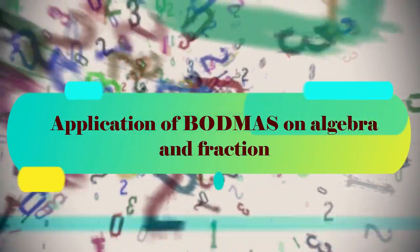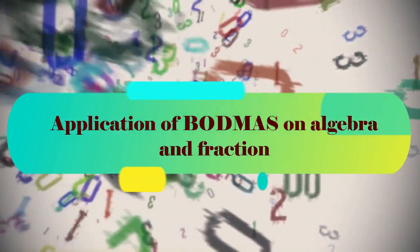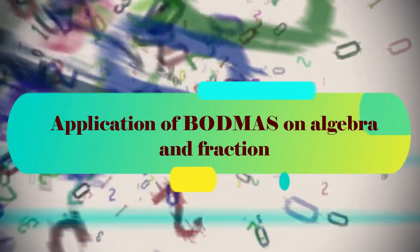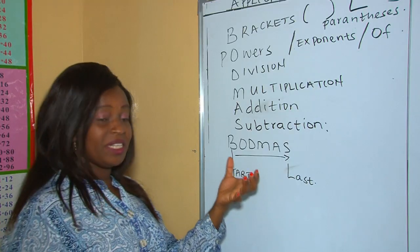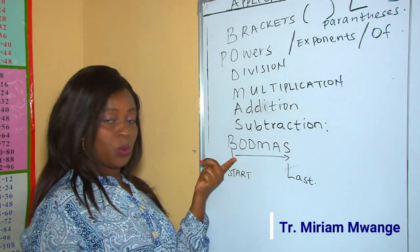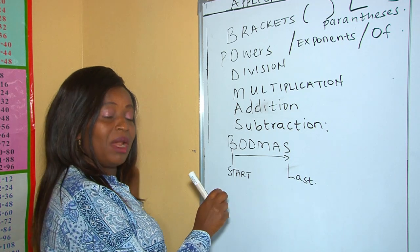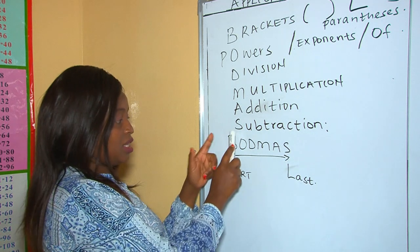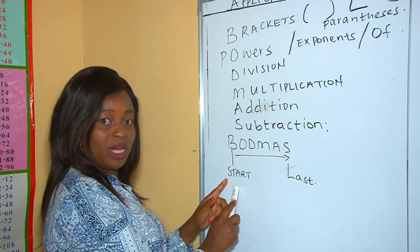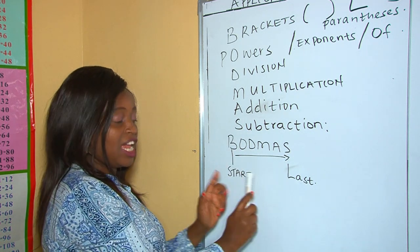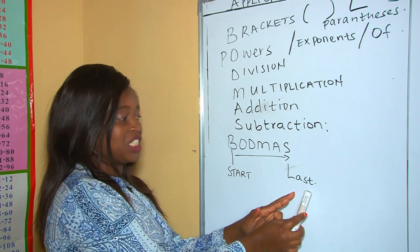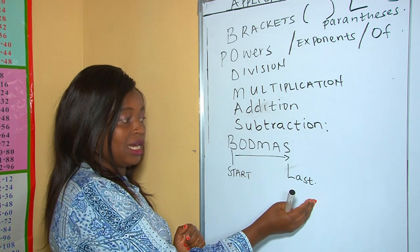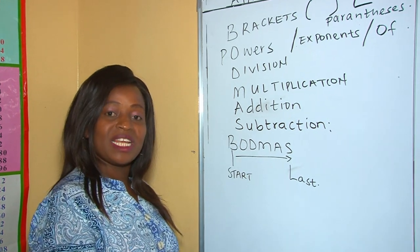Welcome once again to my YouTube channel. Today's lesson is about the application of BODMAS on algebra and fractions. When we write BODMAS we apply it from left to right, as shown by the arrow. The B is the first — we begin with brackets — and we end with subtraction.